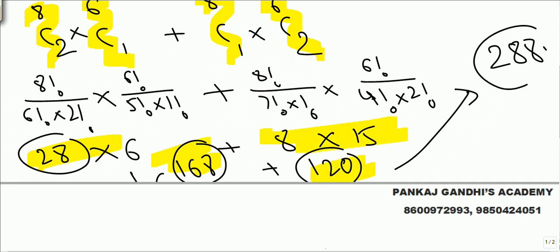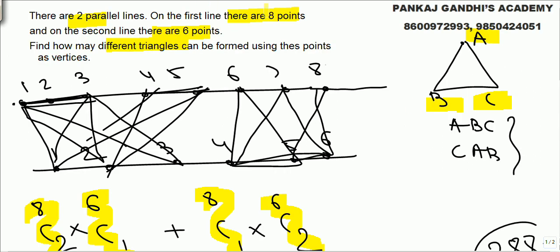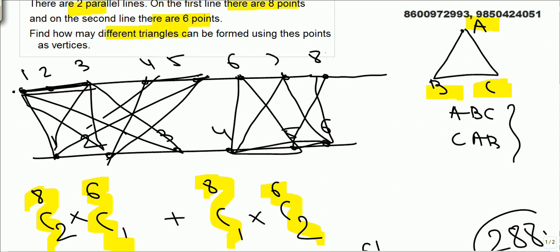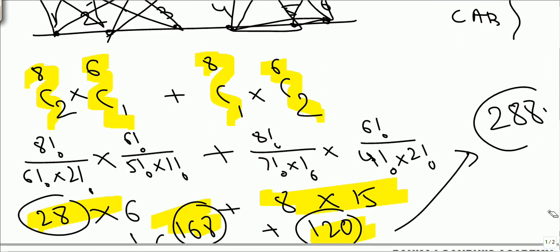Basically what we wanted: we wanted a triangle. Either two from here and one from here, two points from this line and one from here, or two points from here and one point from here. Calculations you all can manage once you know the basics.